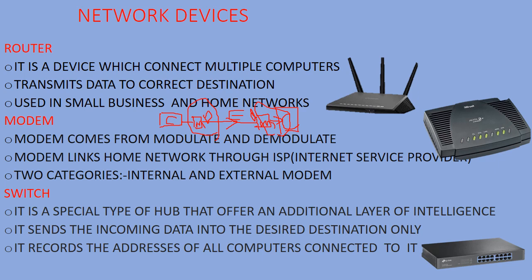Next is the switch. A switch is a special type of hub that also offers an additional layer of intelligence — it may support artificial intelligence. Unlike a hub which forwards data to all computers, a switch forwards data only to the desired destination. The switch records all the addresses of computers connected to it and sends messages personally to the intended recipient.